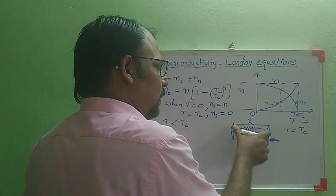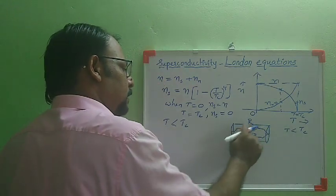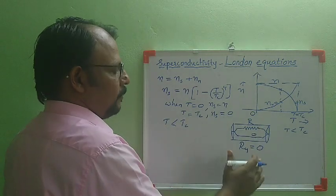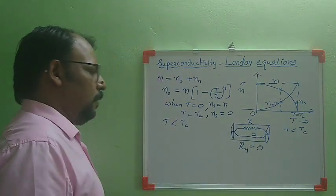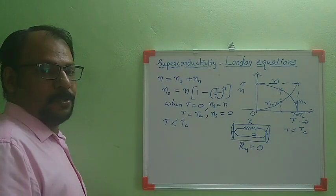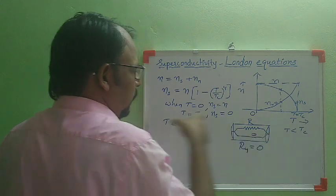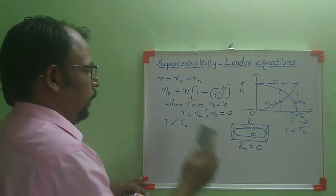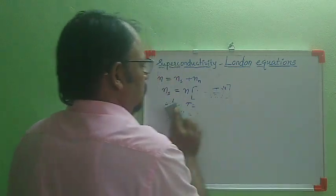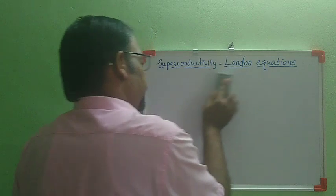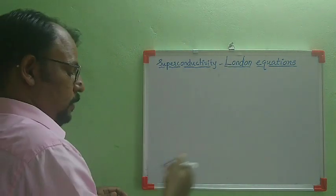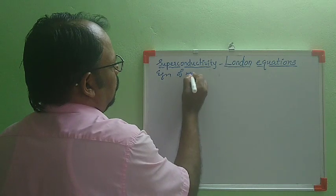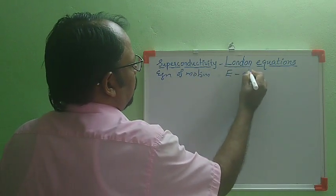Below the transition temperature, the material acts like a superconductor. For studying the transport properties of electrons in a superconductor, we only need to consider the super electrons, since they short-circuit the normal electrons. For deriving the London equation, we consider the transport of super electrons and write the equation of motion of super electrons under the effect of electric field E.